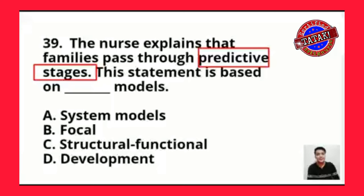Letter A is system model — Bowen's family system theory. Bowen's model views the family as an emotional unit, where family members are intensely connected emotionally. The keyword for system models is that all members of the family are interconnected. So letter A is incorrect.